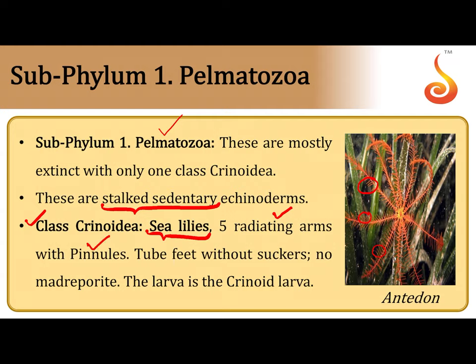Those leaf-like projections are referred to as the pinnules. On the pinnules you will find rows of tube feet which do not have suckers — such tube feet are referred to as podia. Crinoids do not have a madreporite, and their larva is referred to as the crinoid larva.